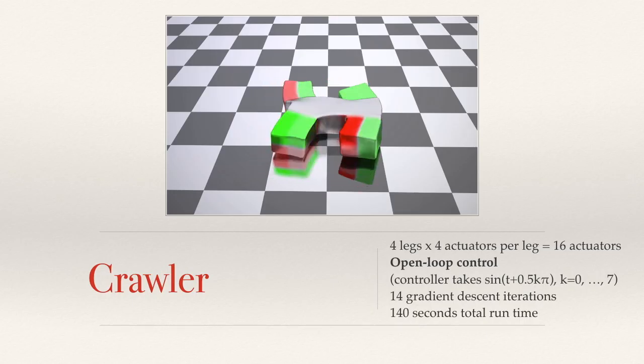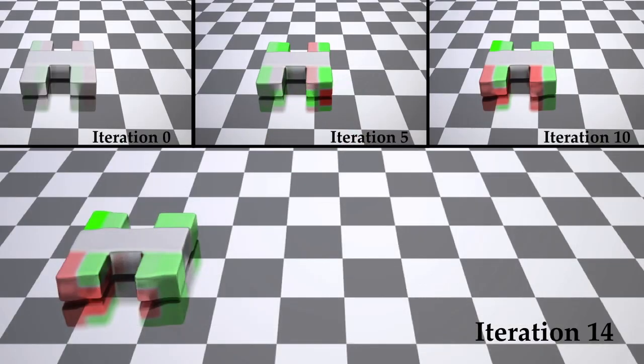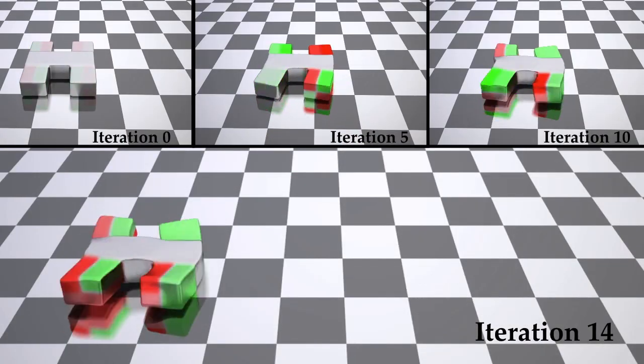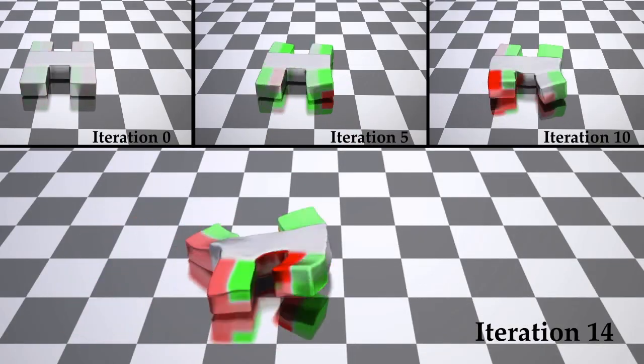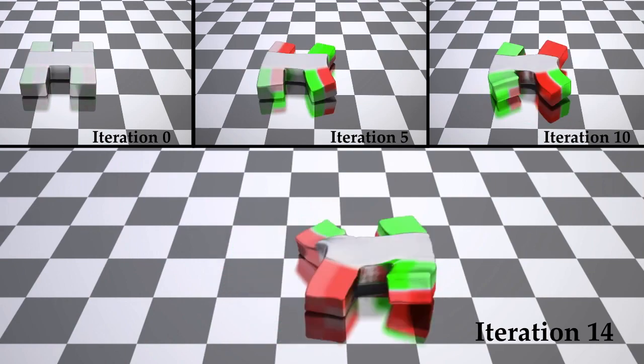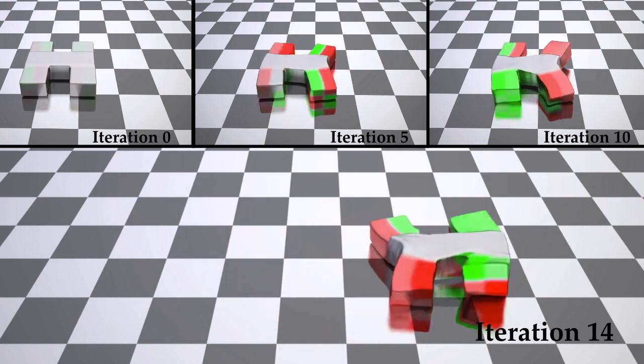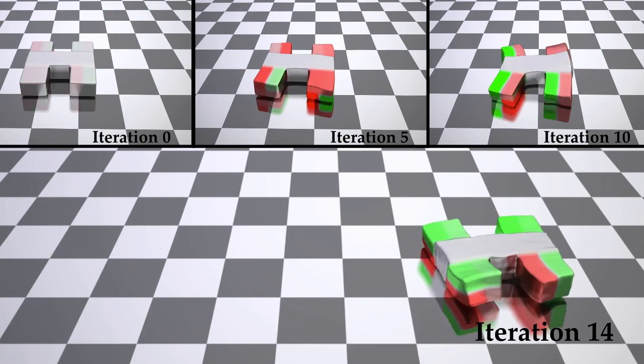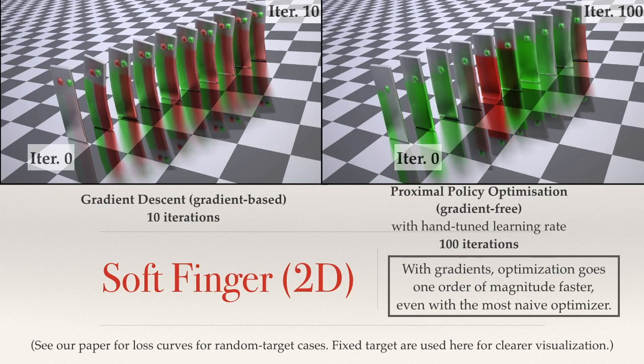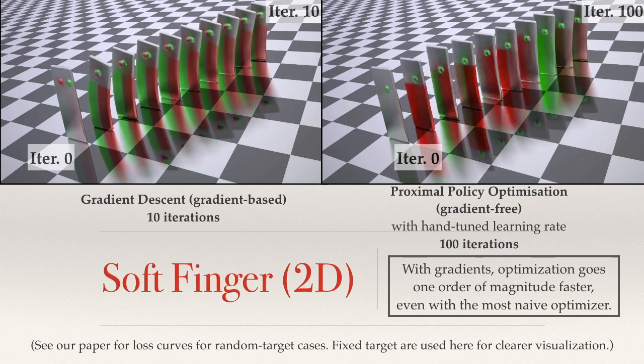The previous examples are controlled with closed-loop controllers. In this crawler example, we use an open-loop controller. The input of the open-loop controller includes sine and cosine signals, leading to a fixed-period motion cycle. The use of gradients has significantly sped up the optimization process.